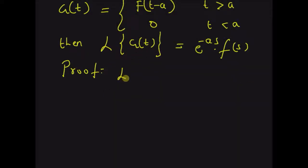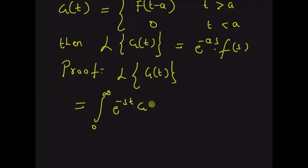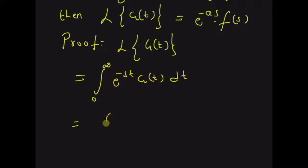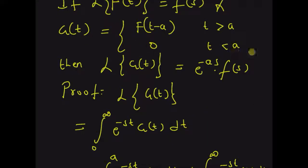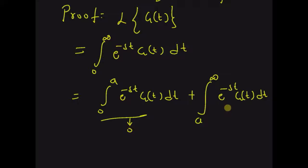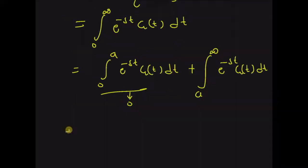Starting with the definition, that is the left-hand side: the definition of the Laplace transform is the integral from 0 to infinity of e^(-st) g(t) dt. By using the definition of g(t), we can rewrite the integral as the integral from 0 to a of e^(-st) g(t) dt plus the integral from a to infinity of e^(-st) g(t) dt. Clearly the first part is 0 because g(t) is 0 for t less than a, so that component is 0.